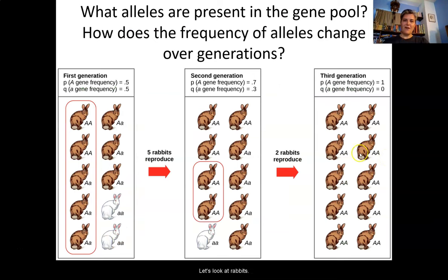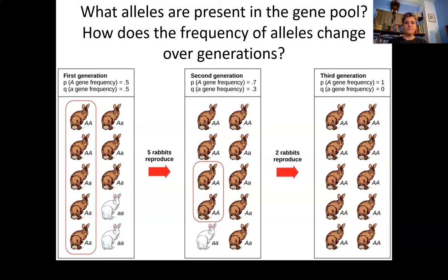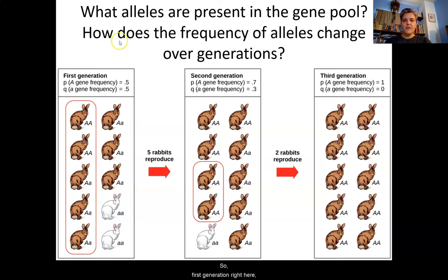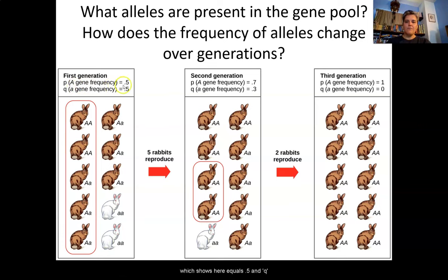Now let's look at rabbits. We're going to answer two questions by analyzing three images: what alleles are present in the gene pool, and how does the frequency of alleles change over generations? In the first generation, we have P representing the dominant A gene frequency, which equals 0.5, and Q is the recessive A gene frequency, which also equals 0.5.